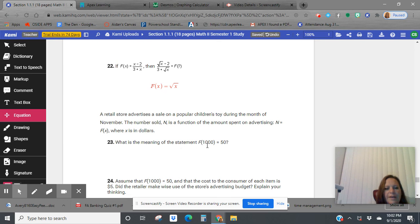What is the meaning of the statement f of a thousand equals 50? A retail store advertises a sale on popular children's toys during the month of November. The number sold is a function of the amount spent on advertising. So when we say f of a thousand equals 50, we're saying that this means that spending $1,000 on advertising, the store sold 50 of this particular toy.